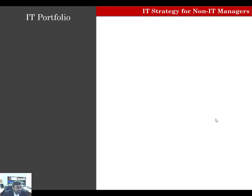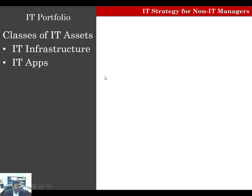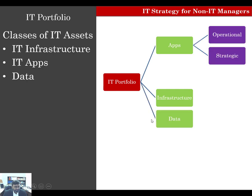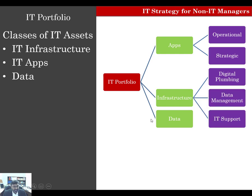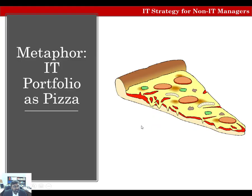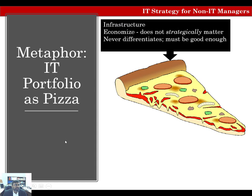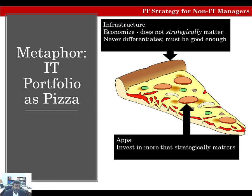Your IT portfolio is a collection of three classes of IT assets: IT infrastructure, IT applications, and data. Your IT apps can be split into operational or strategic, and your infrastructure can be split into digital plumbing, data management, and IT support. If we use the metaphor of IT portfolio as a pizza, the infrastructure is your crust and the applications are the toppings. Applications are the ones which actually cause differentiation, whereas infrastructure does not cause differentiation and just must be good enough. Separating them allows you to be strategic in investing in IT.